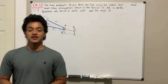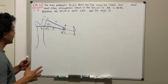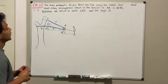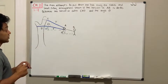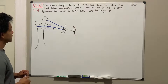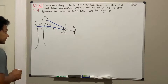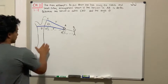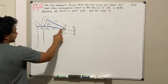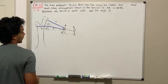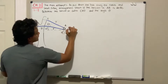Welcome everyone to Learning by Teaching. We're in statistics and we're going to do problem 3.7. It says a man attempts to pull down a tree using a cable and small pulley arrangement. If the tension AB is 60 pounds, determine the tension in cable CAD and the angle theta. We have the pulley system and the man is applying a total of 60 pounds.